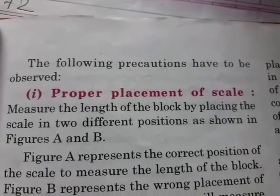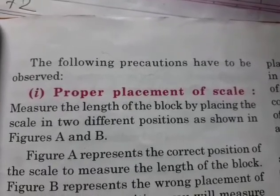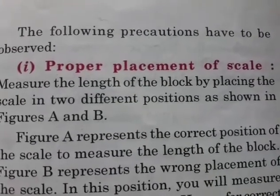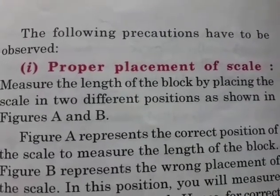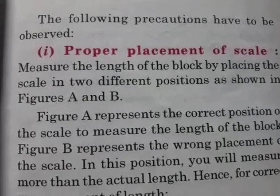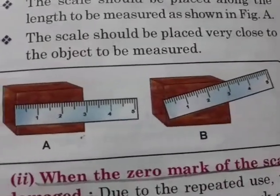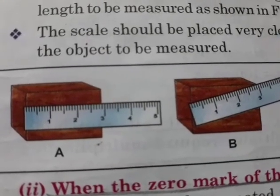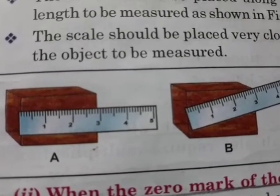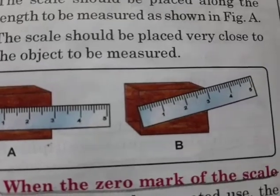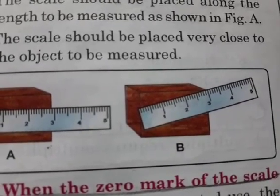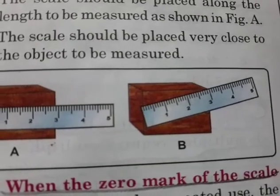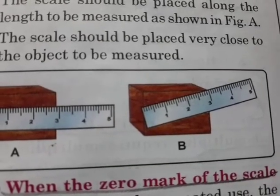In our day to day life we use a scale for measurement, but many of us do make mistakes in using it. The first precaution is proper placement of the scale. As you can see in the picture, in figure A the scale has been kept straight, but in figure B the scale is not kept straight. This is what is meant by proper placement of scale.